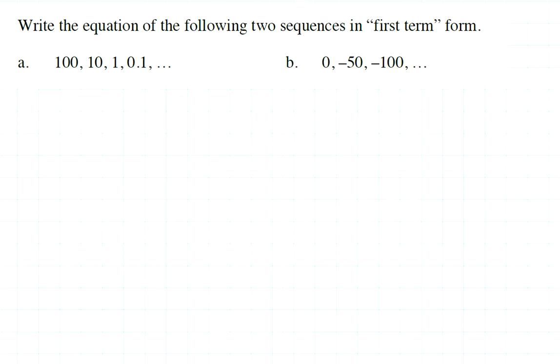So A, if I look at that 100 to 10, I could say, oh, I'm subtracting 90. But if I take 10 and subtract 90, I'm at negative 80 and I'm supposed to be at 1. So this is not an arithmetic sequence. This is geometric. And each time I'm dividing by 10 or I can think of it as I'm multiplying by 1 tenth.